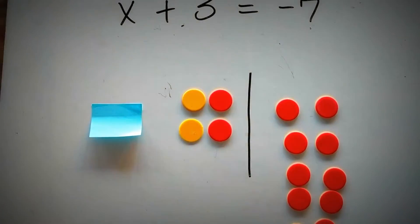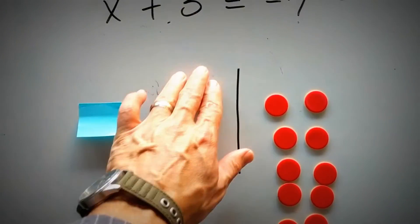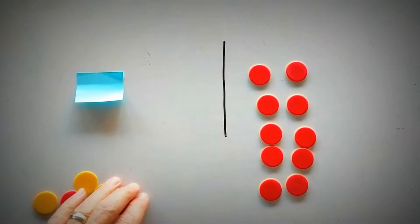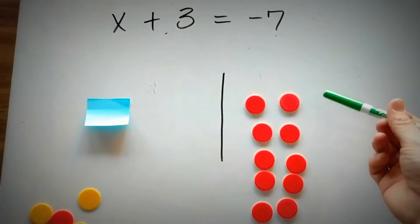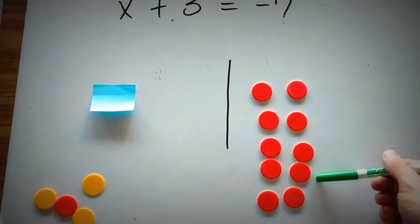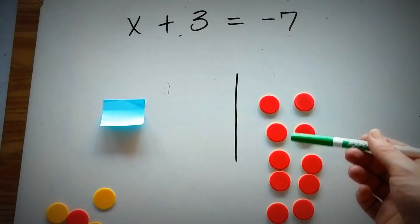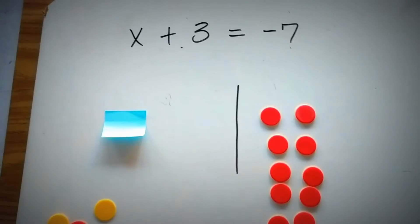Since these are zero pairs, I can take them out. And what is left is 2, 4, 6, 8, 10. Since they're all red, it's going to be a negative 10.